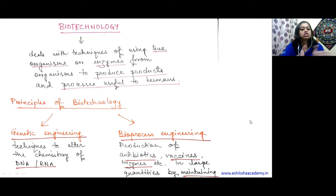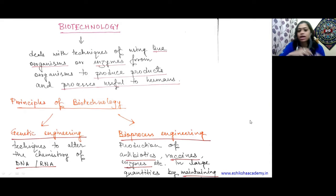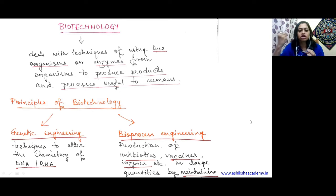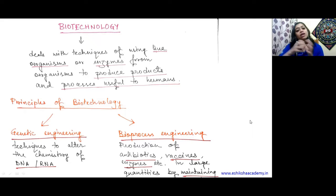The second principle is bioprocess engineering. In living organisms, there are many metabolic processes. In bioprocess engineering, we are basically looking for a particular product - it could be protein, enzymes, vaccine production, antibiotic production, or different drug production from living organisms. We are interested in the product. Just as biotechnology's definition says we work with living organisms or their products, in bioprocess engineering we are basically interested in the product.